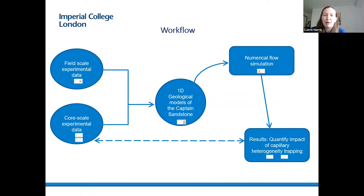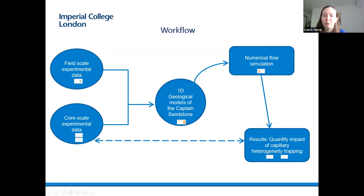To demonstrate the potential impact of this mechanism within a potential UK storage site, I've created 1D field-scale models of the Captain Sandstone based on site-specific experimental data. I used core-scale data and field-scale data to build heterogeneous fine-scale models in 1D, then ran flow simulations on these models, and used the results to inform why we might observe scatter in core-flood experiments. This gives us information about the best way to upscale from core data, by evaluating the potential implications of extracting particular trapping characteristics from core-flood experimental data.